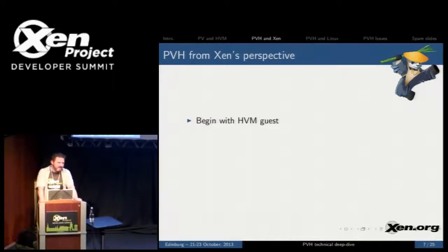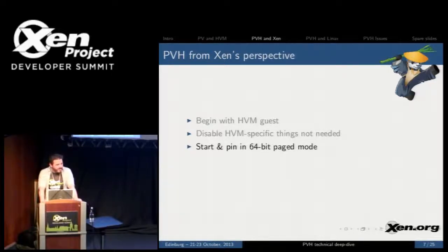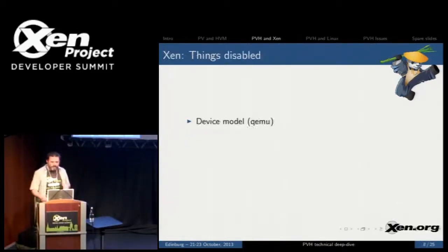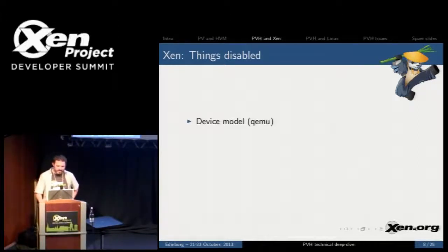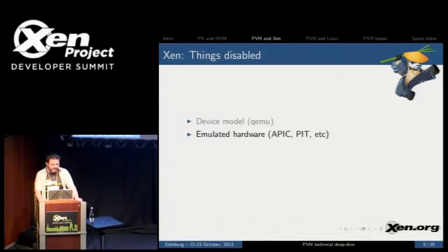PVH from Xen's perspective. At a very high level: you begin with the HVM guest, you disable HVM-specific things that you don't need, you start it in 64-bit mode and keep it there, and then you enable a PV path for a handful of things. Going into more detail on things that get disabled from Xen's perspective: you disable the device model QEMU, and that means disabling all of the MMIO emulation. You disable emulated hardware — Xen emulates a number of things required for performance reasons, like APIC and PIT. So you disable those for PVH guests. You also disable nested HVM and MSIX.